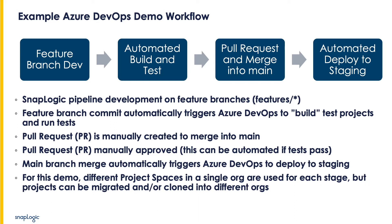Then we'll manually create a PR that will merge into main. That PR will be approved — this can be automated if the tests pass. The main branch merge will automatically trigger Azure DevOps to deploy to staging. For this demo, for simplicity, different project spaces in a single org are used for each stage, but projects can be migrated and cloned into different orgs.